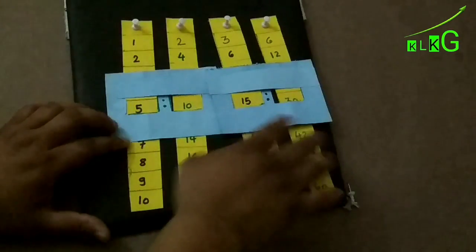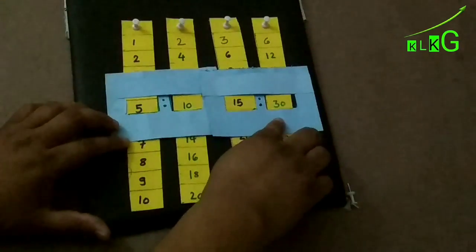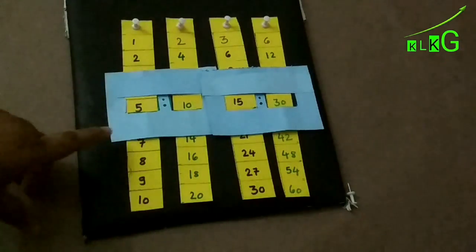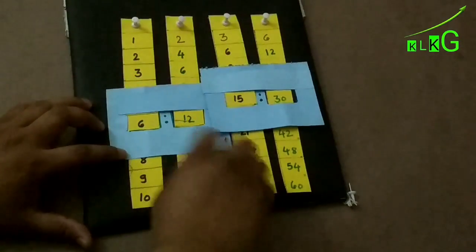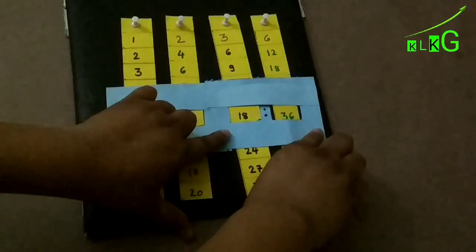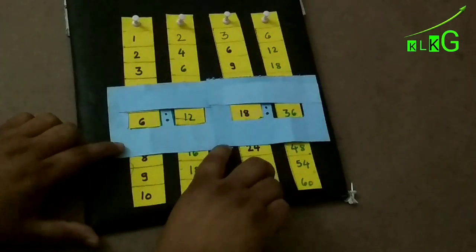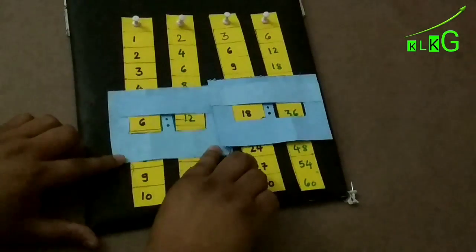See, as we come down, we can find that 5 is to 10 is equal to 15 is to 30. We can see here that 6 is to 12 is equal to 18 is to 36. Again, if we move down, we will get 7 is to 14.